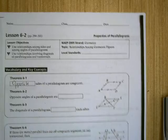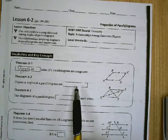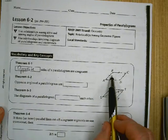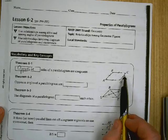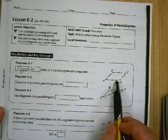So we're in Lesson 6-2. Opposite sides of a parallelogram are congruent. Those little airplane or triangle looking things tell you that these are parallel.